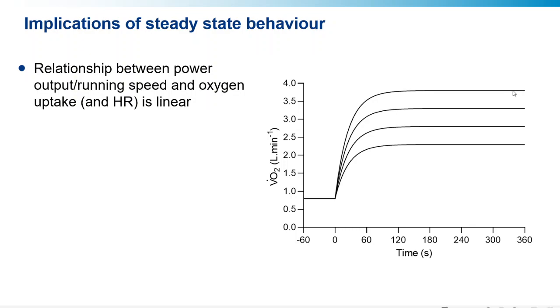How do I know how big those increments are? Well, there's a nice relationship between VO2 and power output. So for every 1 watt increase in power output, you would expect to see an approximately 10 milliliter per minute increase in VO2. And so it linearly increases with work rate.